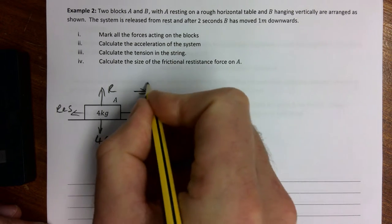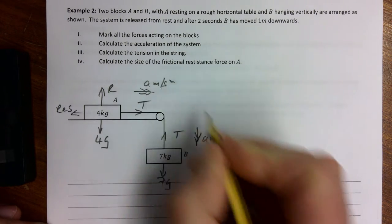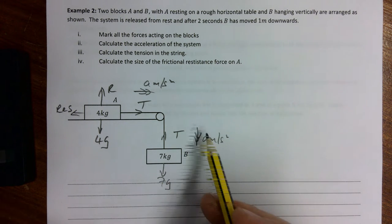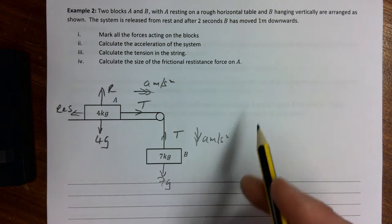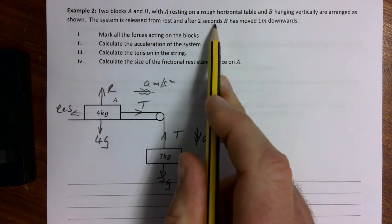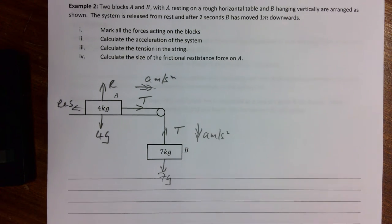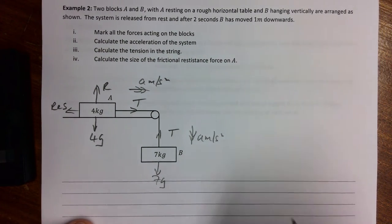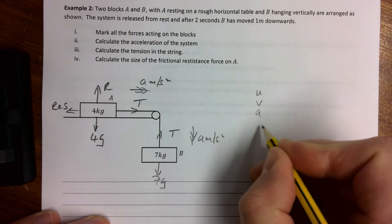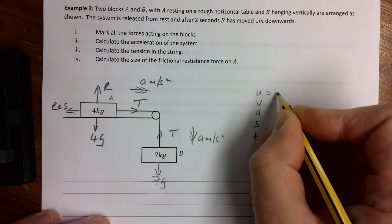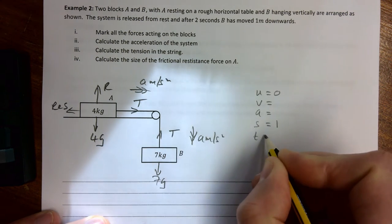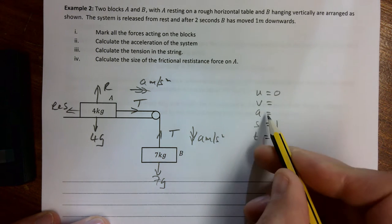It then says calculate the acceleration of the system. Nine times out of ten whenever you're working out acceleration with pulleys and stuff like that we would use F equals MA, and we're going to use F equals MA, but in this case we can get our acceleration from rest, 2 seconds, and 1 meter downwards. So we're going to do it that way using u, v, a, s, and t. It starts from rest so u is 0, v we don't know, a we're about to work out, s is 1, and t is 2.